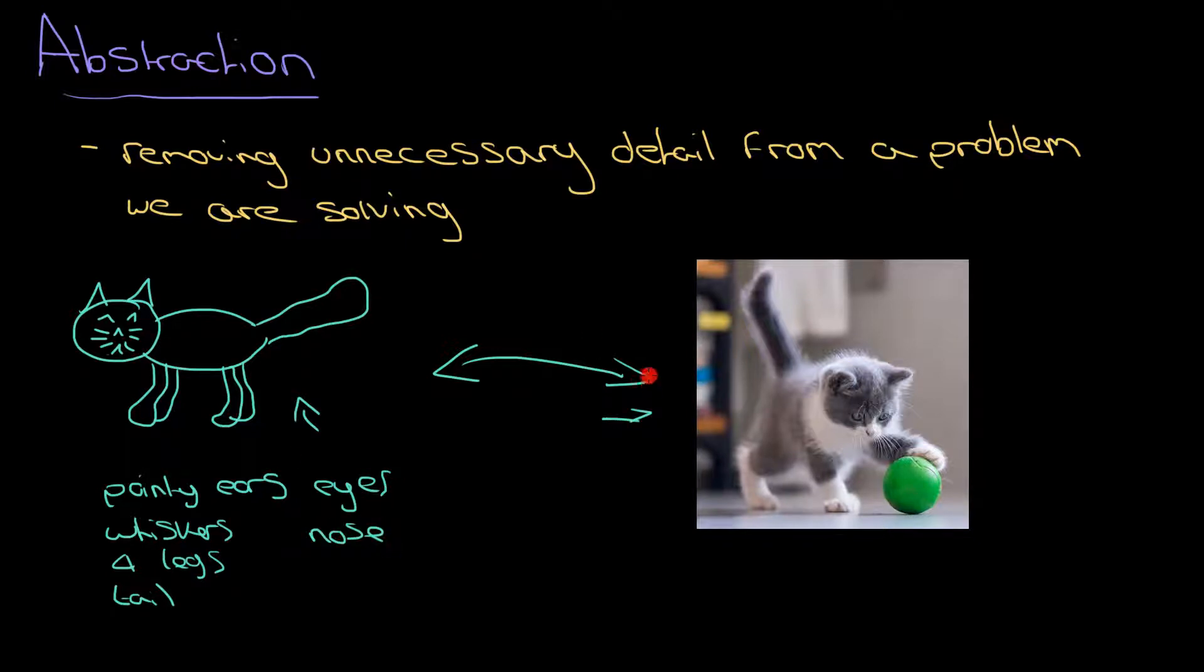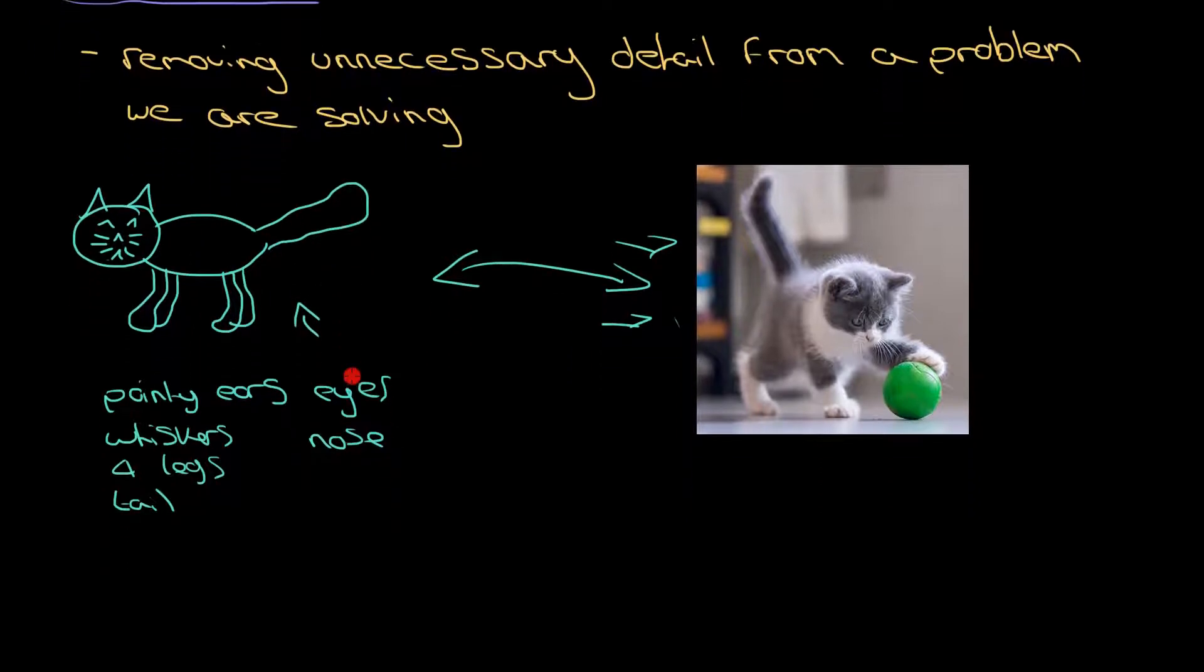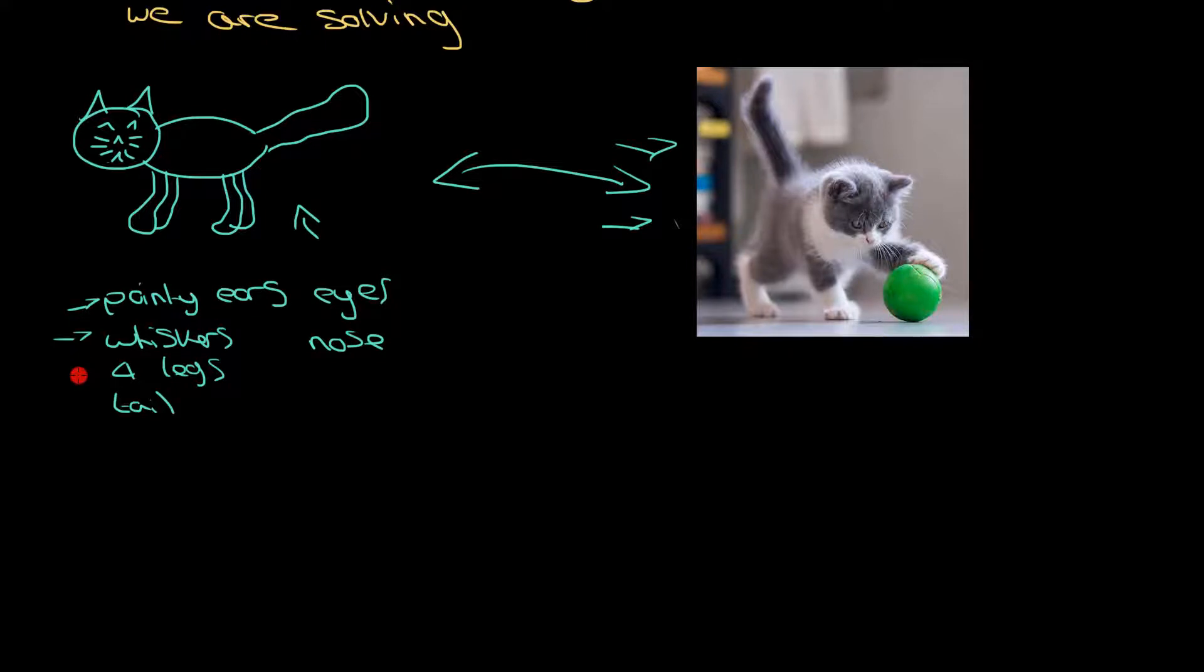So if my problem is to draw a picture of a cat then I'm going to do the one on the left hand side because I can draw that one much faster. I've removed a lot of unnecessary detail and it's simpler to do, there's just simply less to draw.